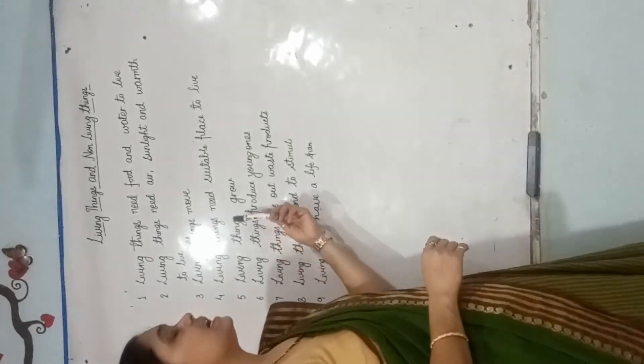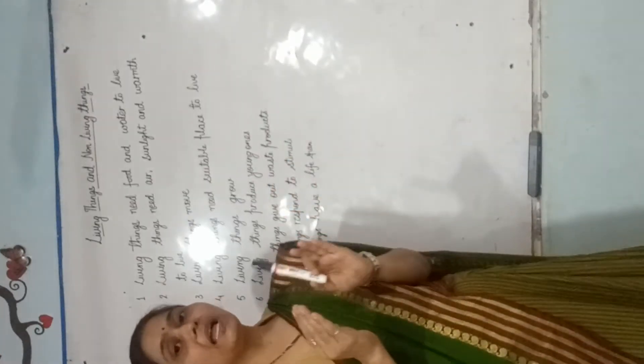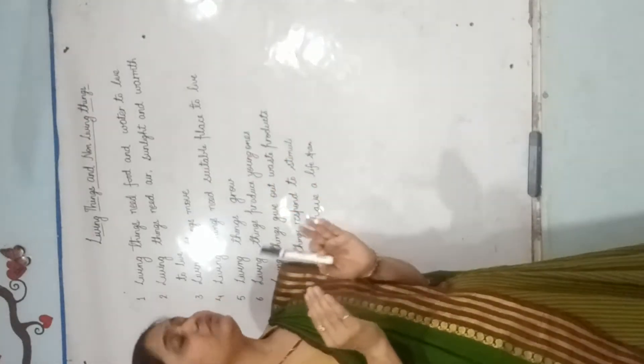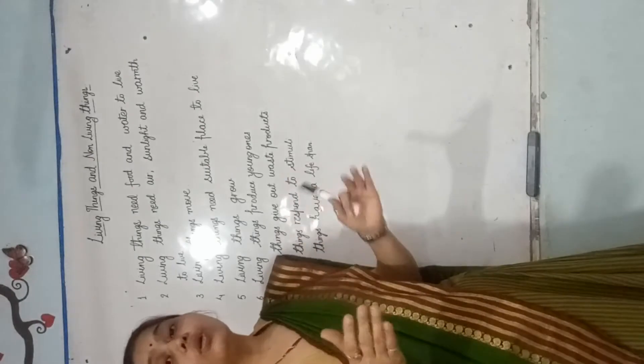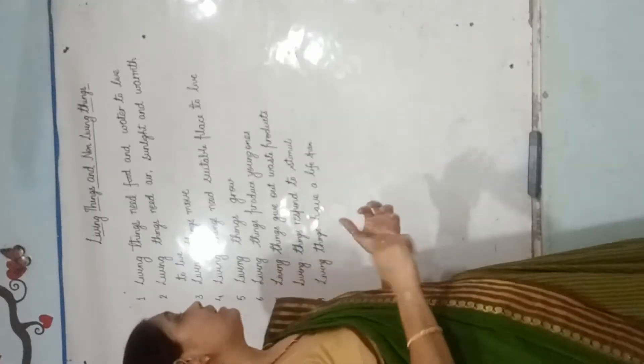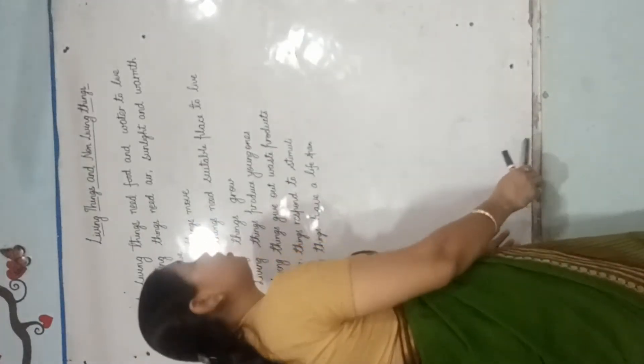जबकि living things — अगर आपने छोटा सा puppy पाल रखा है, तो आप देखेंगे कि वो grow करता है. वैसे ही plants होते हैं — plants भी आप देखेंगे कि grow करते हैं.